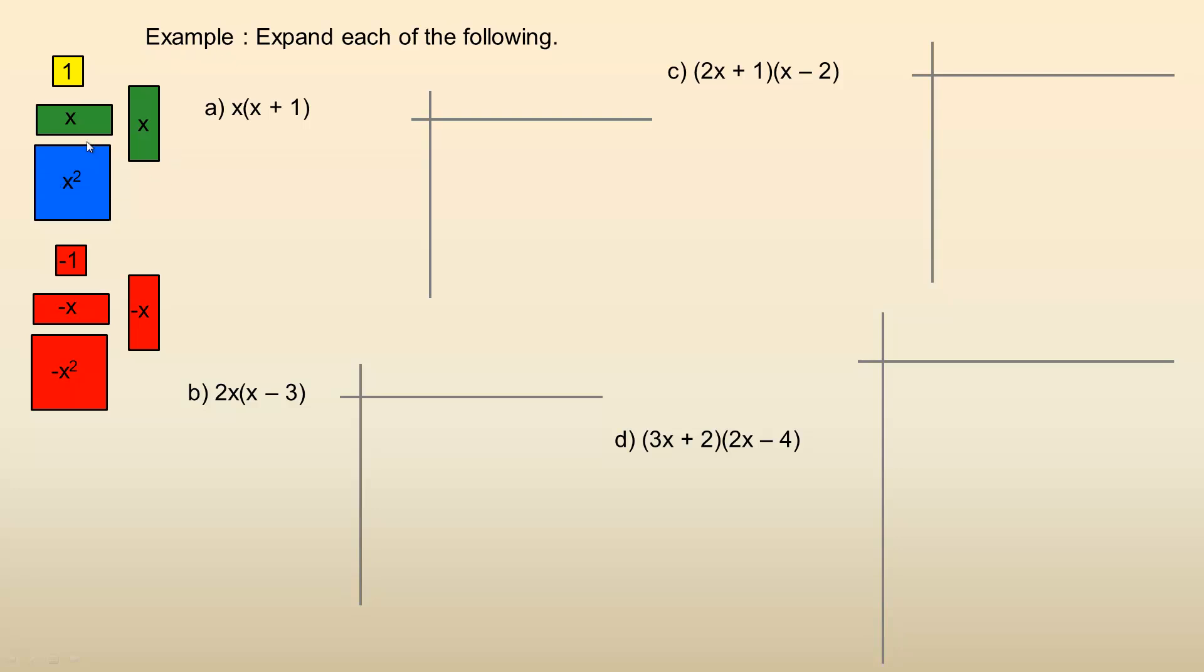This is an X square, this square represents X squared, because it's an X by X rectangle. Remember, X times X gives you X squared.